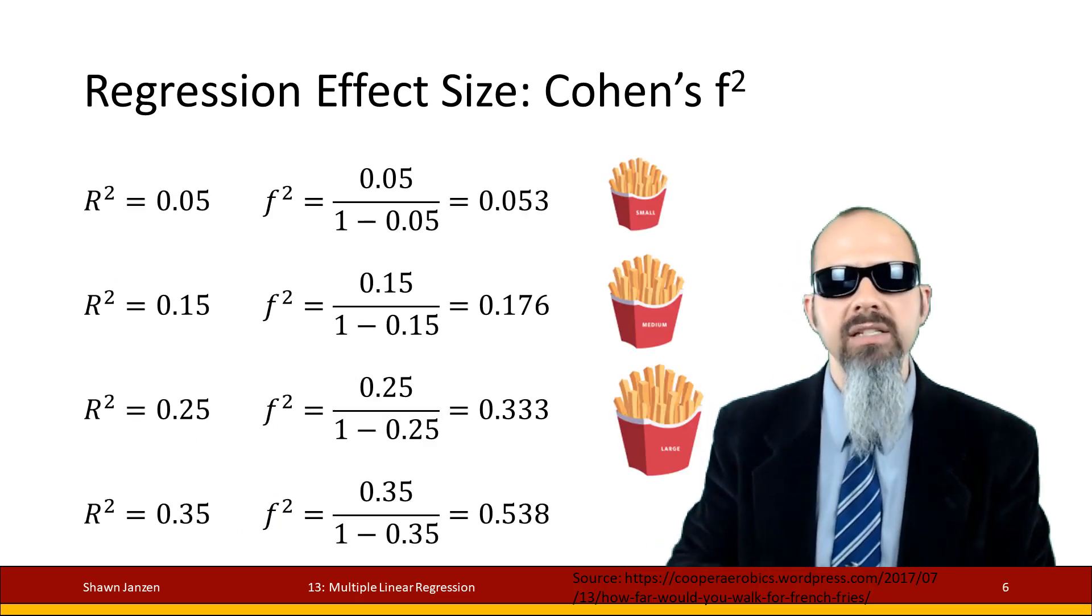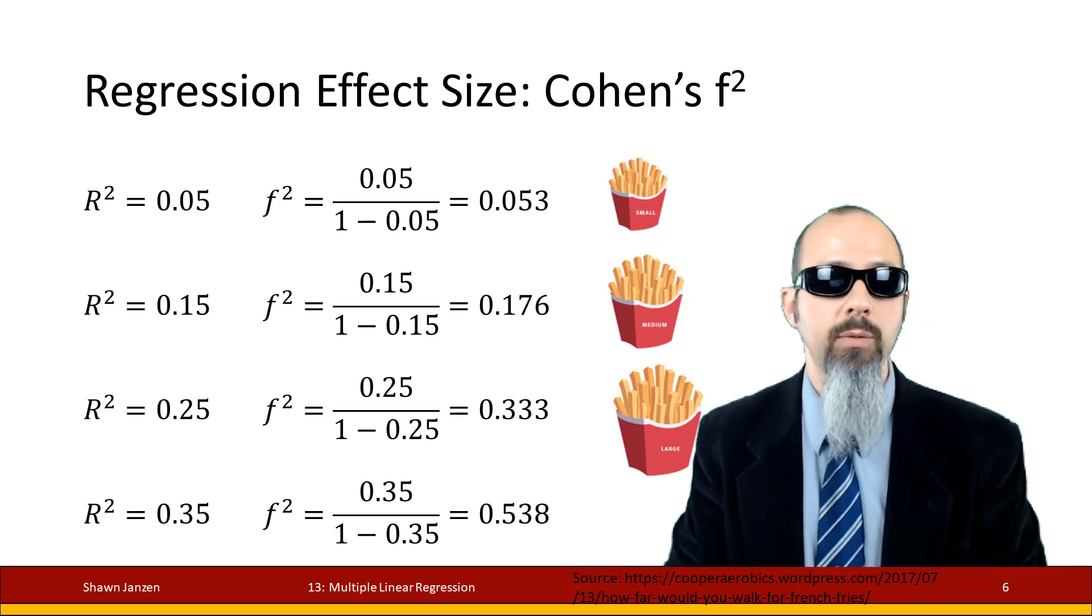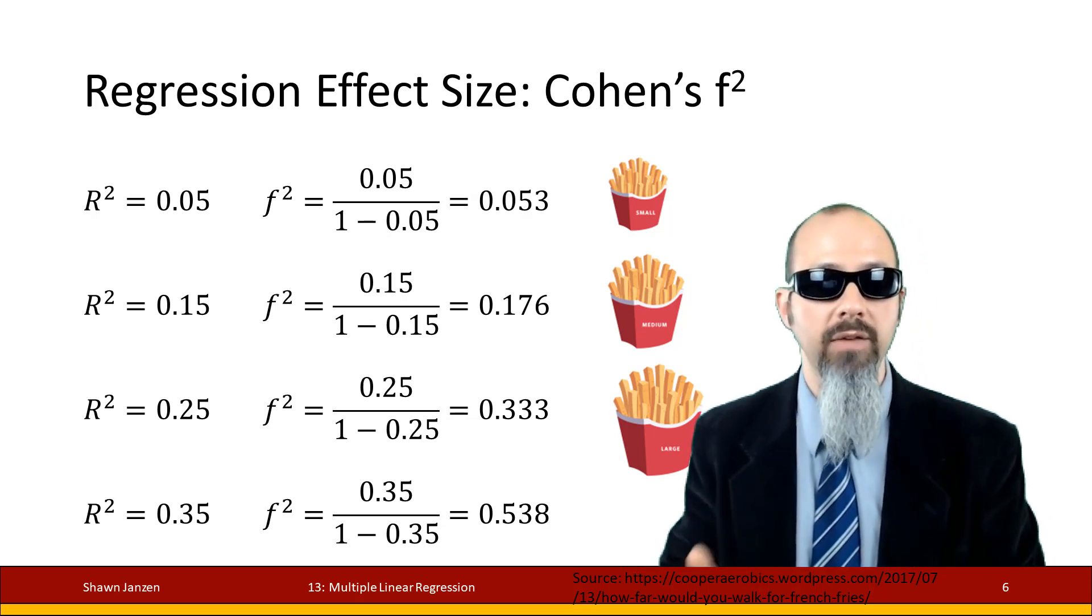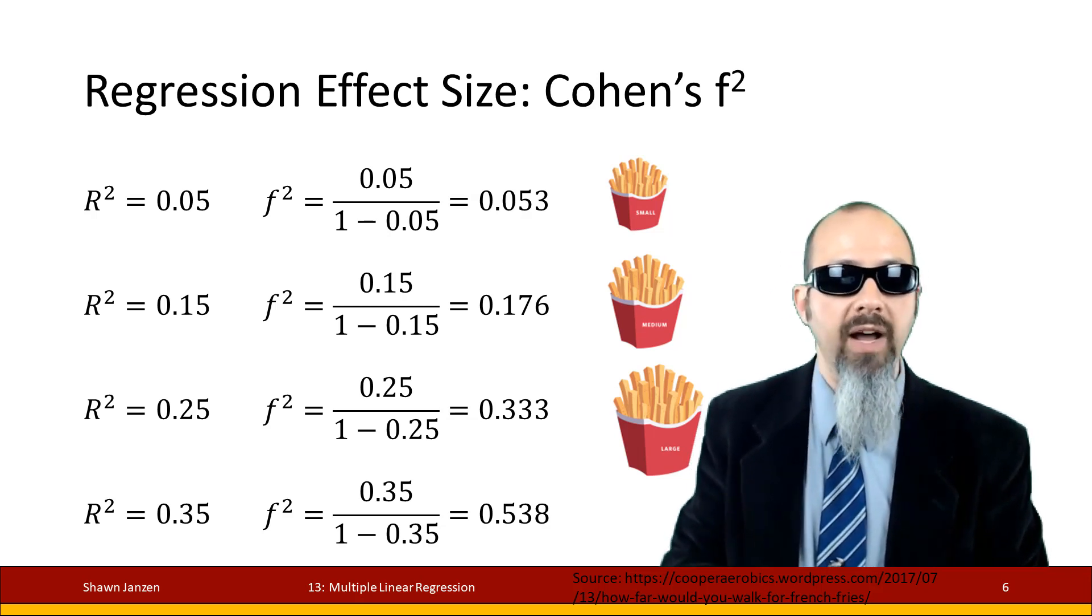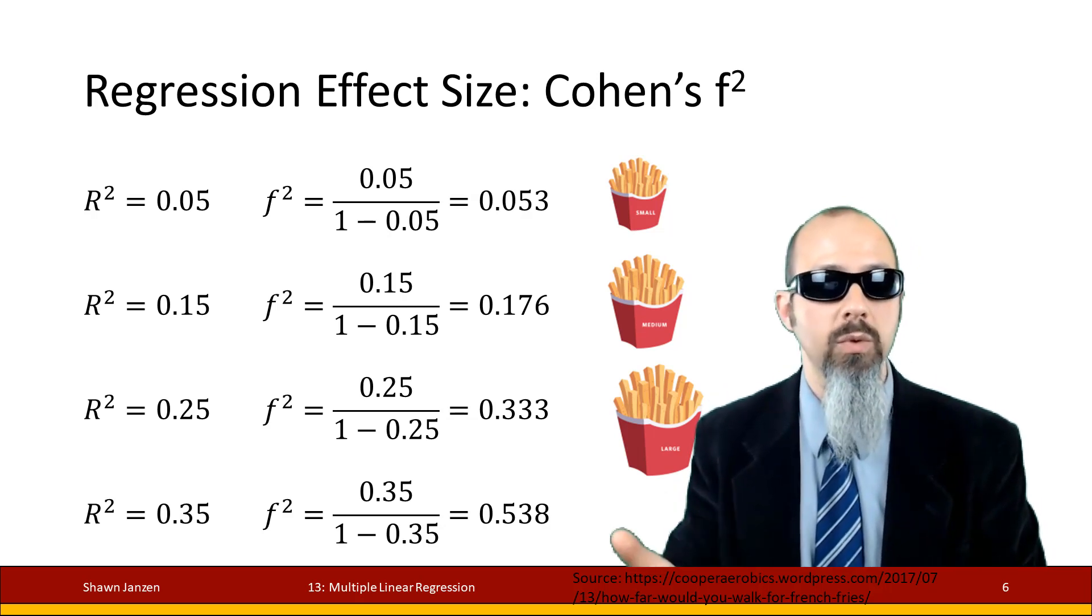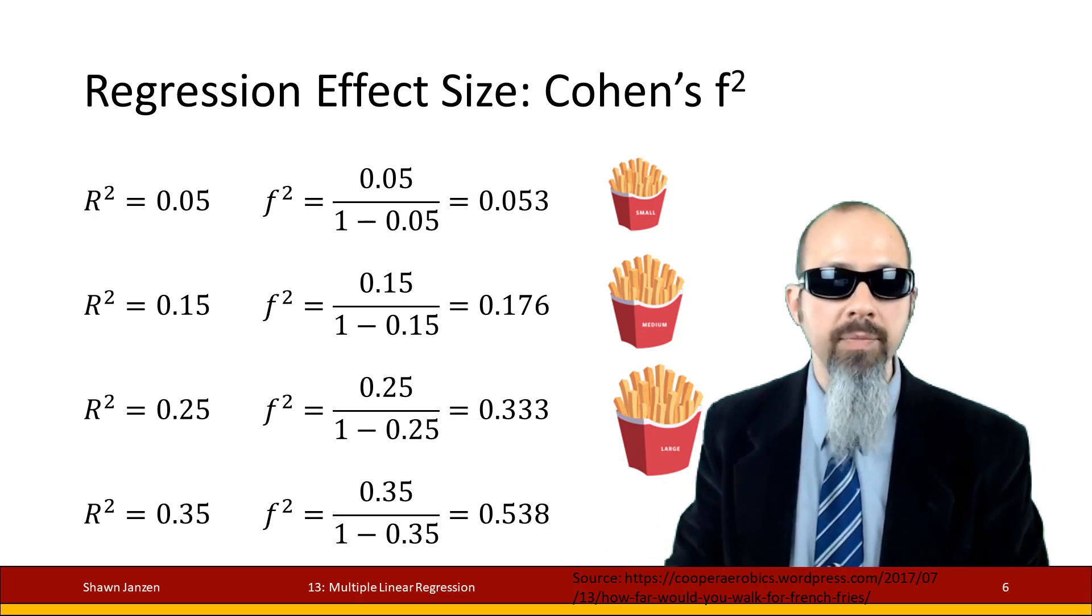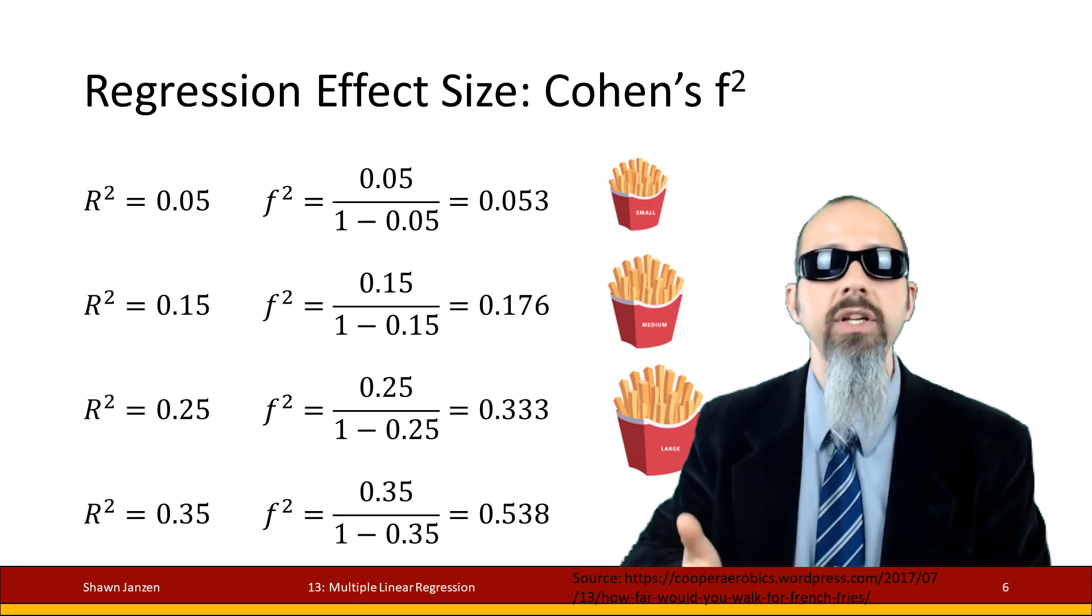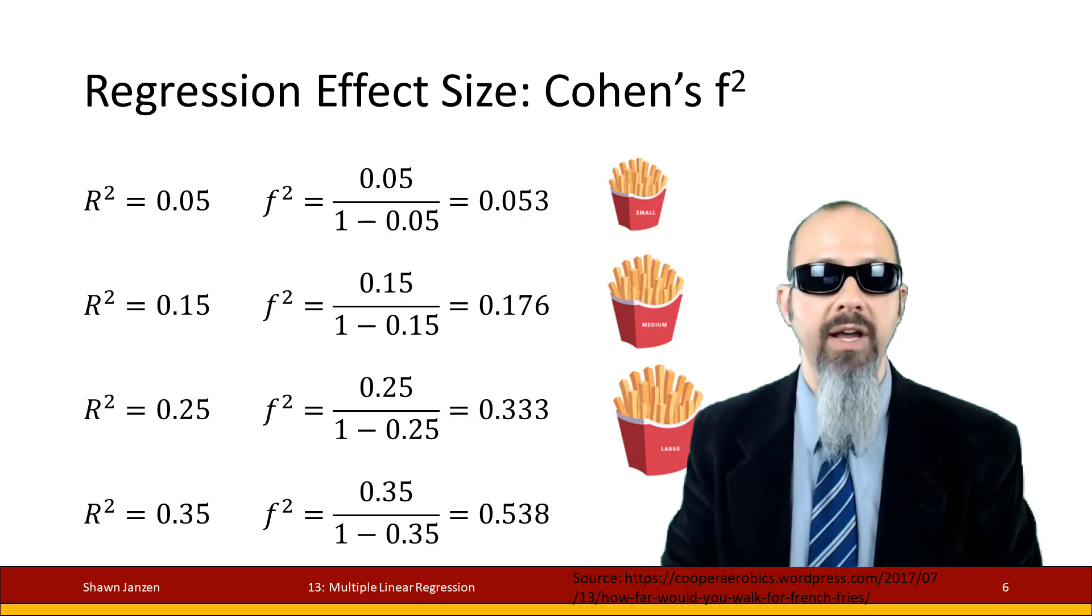Let's compare different values of r² to generate different f²s. An r² of 0.05 comes out with an f² of 0.053 (small). An r² of 0.15 generates an f² of 0.176 (medium). The next two are both large. An r² of 0.25 - only a quarter of variation explained - is still quite a bit because an f² of that is 0.3 repeating, which is almost at that cusp for being large.